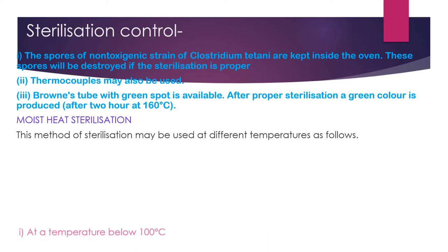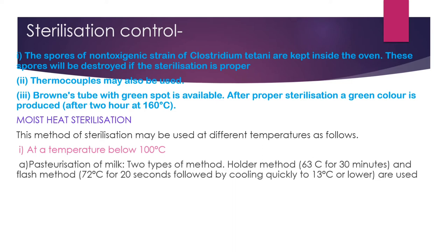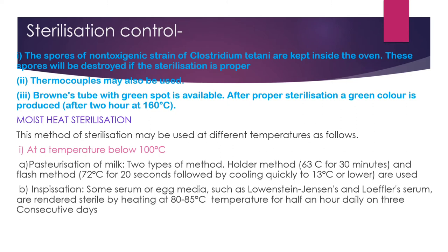Now, moist heat sterilization can be used at different temperatures. Below 100°C, we can do pasteurization of milk by two methods: the holder method at 63°C for 30 minutes, and the flash method at 72°C for 20 seconds followed by rapid cooling to 13°C or lower.